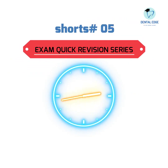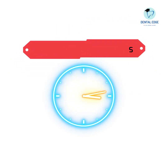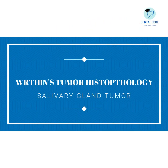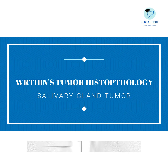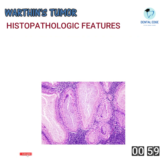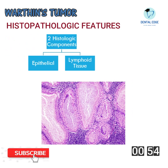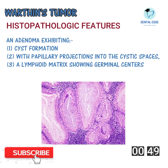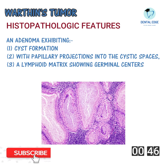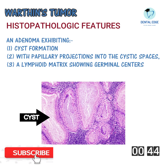Welcome to the exam quick revision series. Let's see the histopathologic features of Warthin's tumor under one minute. Microscopically, it is very characteristic — there are two histologic components: an epithelial component and a lymphoid component. It is an adenoma, that is, a benign tumor of glandular tissue origin showing cyst formation.